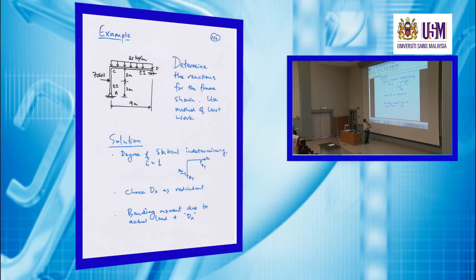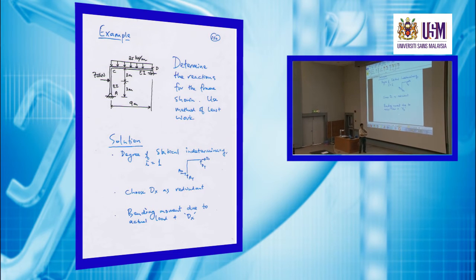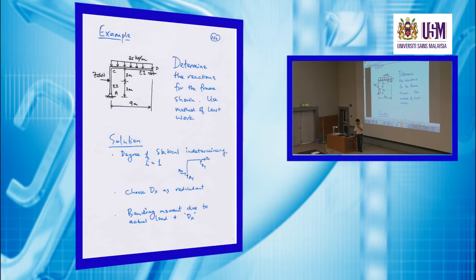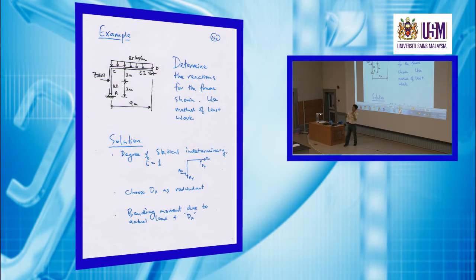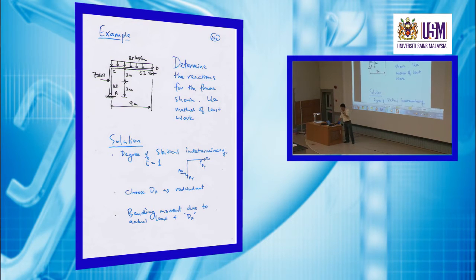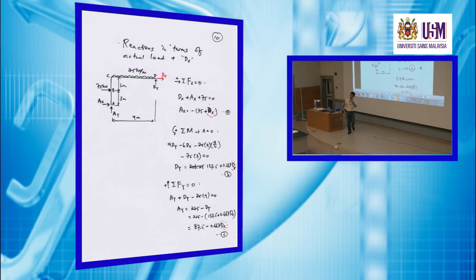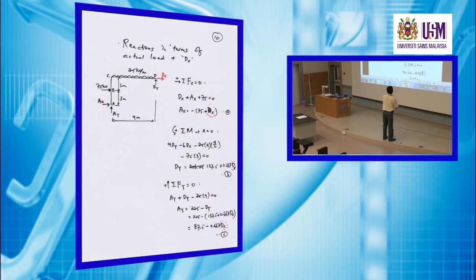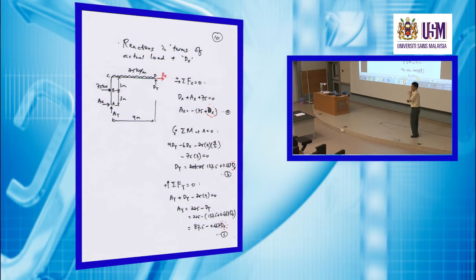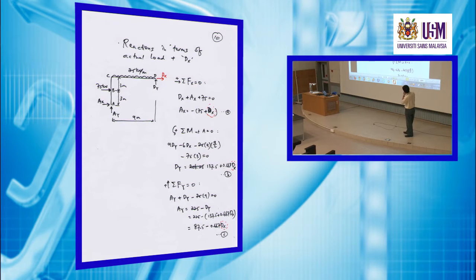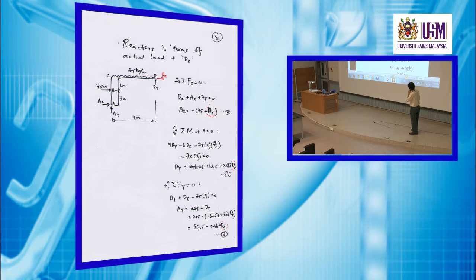This is a frame problem, so the strain energy stored in the frame comes from bending and also axial deformations. But in this example, we are given only the value of EI — EA is not given. So we do not have to consider axial deformations. We only need to evaluate the bending moment. The first thing to do is calculate the bending moment, for which you need to know the reaction forces. We consider DX as a loading together with the other loads: 75 kN, 25 kN/m, and DX.